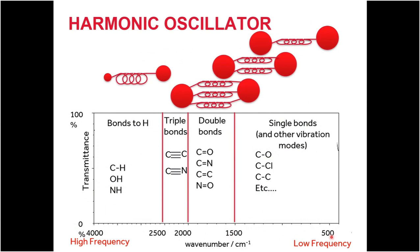Looking at the infrared spectrum, we can see these effects in action. On the left-hand side of the spectrum, bonds between reasonably heavy atoms and hydrogen — such as C–H, O–H, and N–H bonds — show a very large mass differential, resulting in vibrations at a high frequency or high wavenumber. Moving to the right, we see carbon-carbon and carbon-nitrogen triple bonds, followed by double bonds in a slightly lower frequency region.